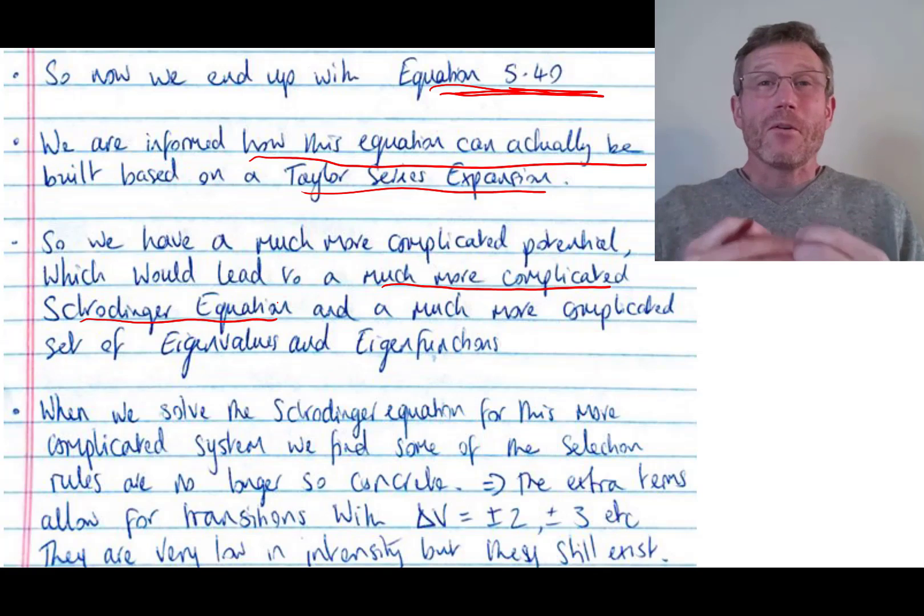But that means, already this solution is bad enough, it's outside the scope of our class. We now put in this Taylor series expansion type potential energy term, and we're going to find we have an even more complicated set of eigenvalues and eigenfunctions.